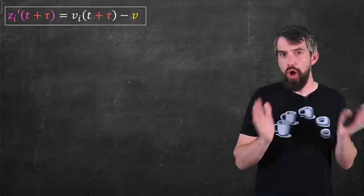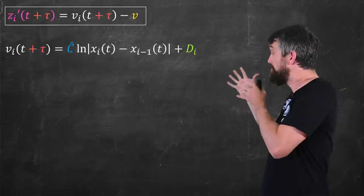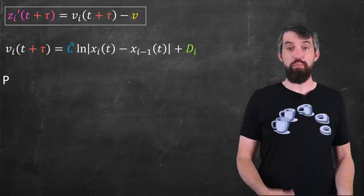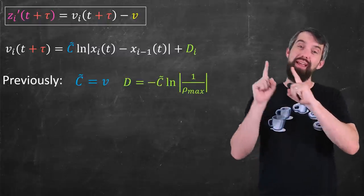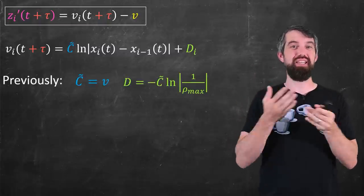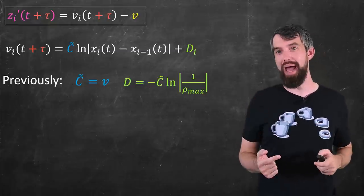In this expression, we know a lot from the v_i's we had of our model, and that was the whole point. This was our big model for the v_i's. And previously, we figured out what those constants are going to be. At equilibrium, at the optimal density, the c was going to be the v, and the d was this minus c logarithm of 1 over ρ_max.